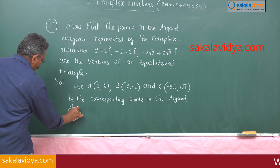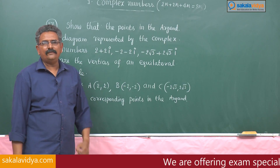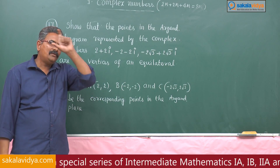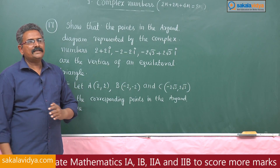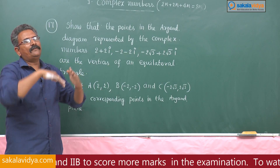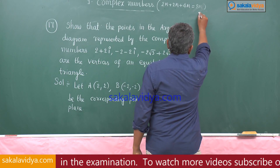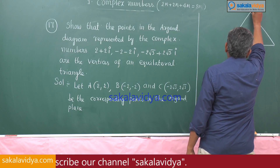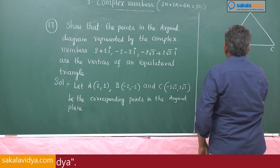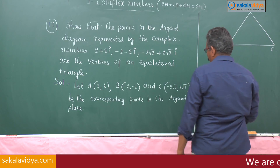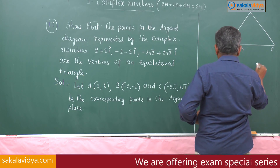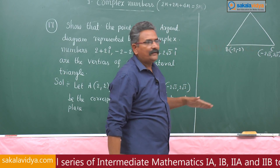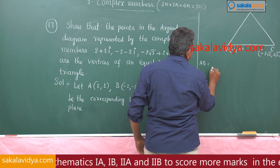We need to prove these three points form an equilateral triangle. In an equilateral triangle all sides are equal, so it is enough to show all side lengths are equal. Consider triangle ABC with vertices A(2,2), B(−2,−2), C(−2√3, 2√3). First, find the length of AB using the distance formula: AB = √((−2−2)² + (−2−2)²) = √(16+16) = √32 = 4√2.